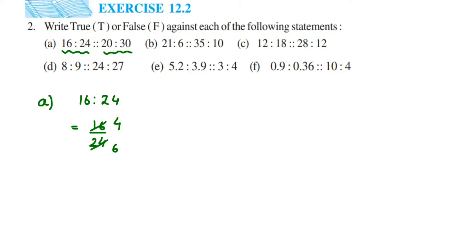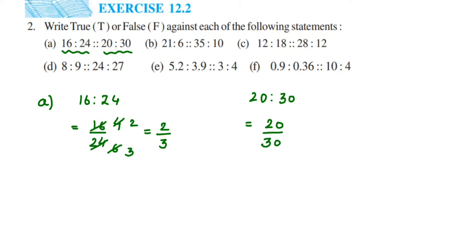After cancelling in the four table, we get four and six. Both go in the two table: two twos are four, two threes are six. Now two by three cannot be cancelled further. Similarly, the second ratio 20 by 30 — cancel in the ten table: ten twos are 20, ten threes are 30 — gives us 2 by 3. Both ratios equal 2 by 3, so they are equal. The answer for the first question is TRUE — they are in proportion.